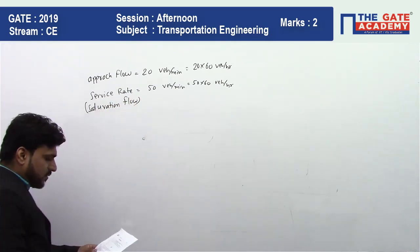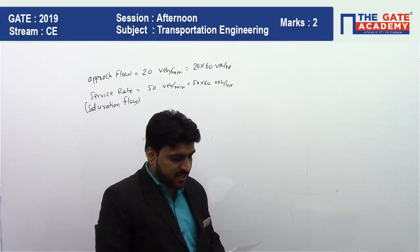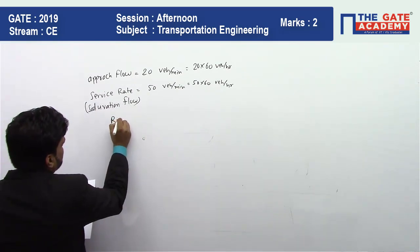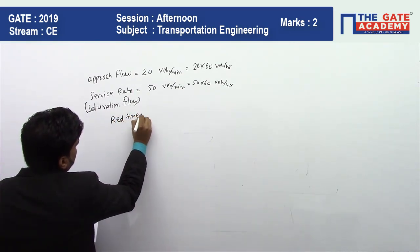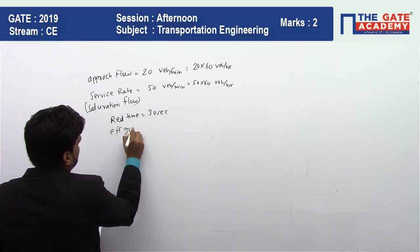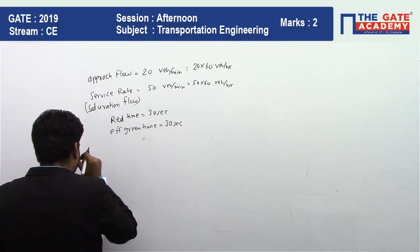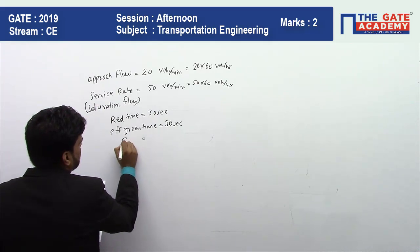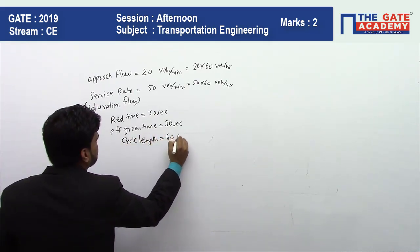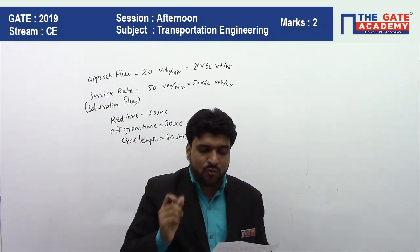Two values are given. Now the next part of the question states: for this signal, the red time is 30 seconds and the effective green time is also 30 seconds. So the total cycle length for the section is 60 seconds.